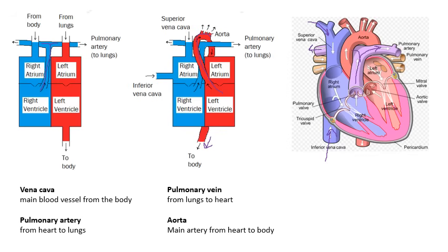The pulmonary vein — veins go to the heart — goes from the lungs to the heart. Blood comes through the pulmonary vein into the left atrium, goes through a valve into the left ventricle, and then from the left ventricle the main artery going away from the heart is the aorta. So learn those — it's important you know those.